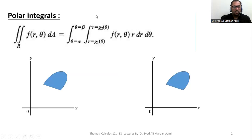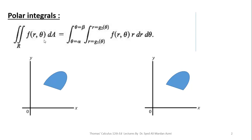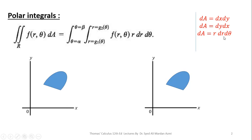Next we will learn how a polar coordinate integral looks. In a polar integral, as shown on the left-hand side, it is given as a double integral over region R of f(r, θ) dA. In polar integral, the function is given in the form of r and θ, and dA is a small area element of the given region. For the Cartesian system dA is dx dy or dy dx, but in polar coordinates we always take dA as r dr dθ. So I have replaced dA here with r dr dθ.